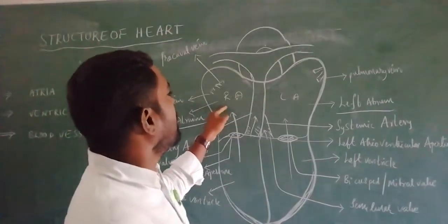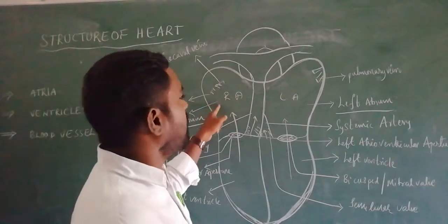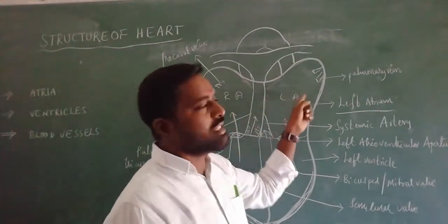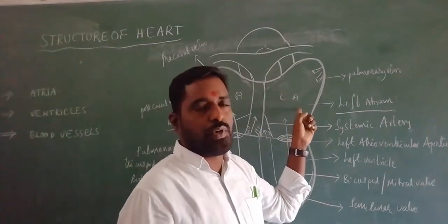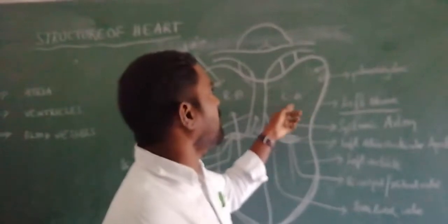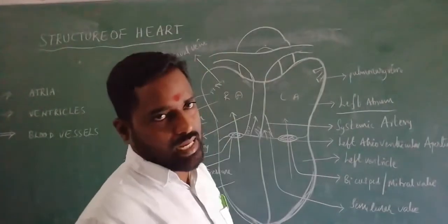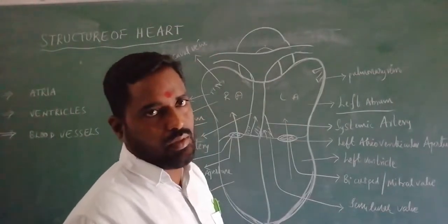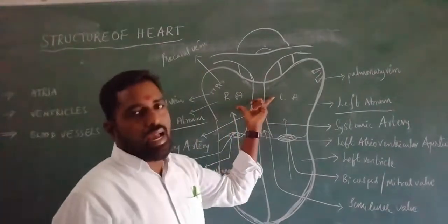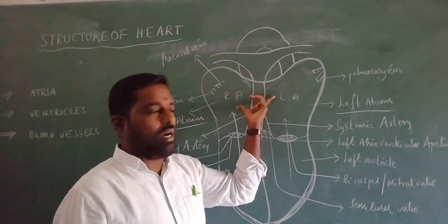In summary: the right atrium receives impure or deoxygenated blood from the body parts, and the left atrium receives pure or oxygenated blood from the lungs. This is about the atria, the upper chambers of the heart.